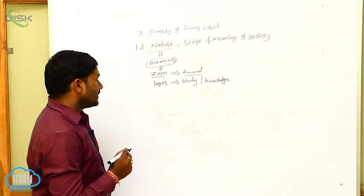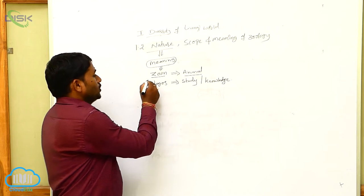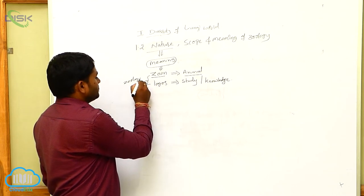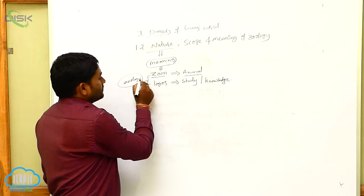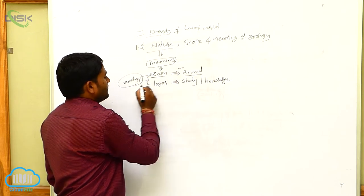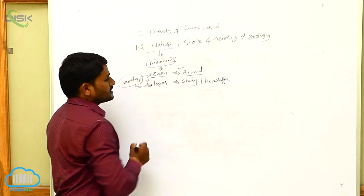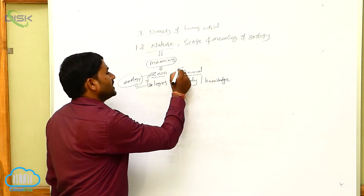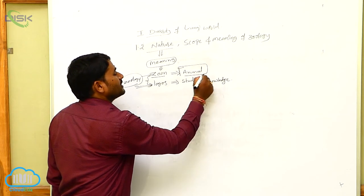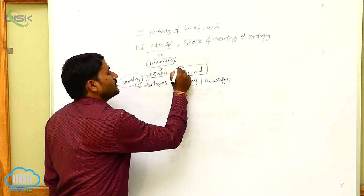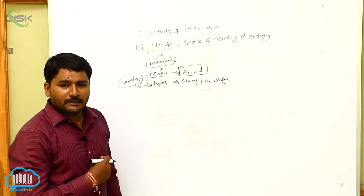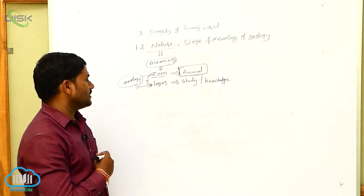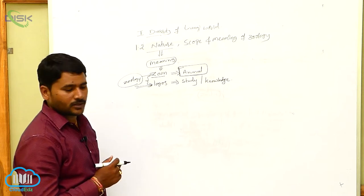So, the two words combined form the word Zoology. Zwaan means animal, Logos means study or knowledge. So, the study of animals in different types of aspects is called Zoology.